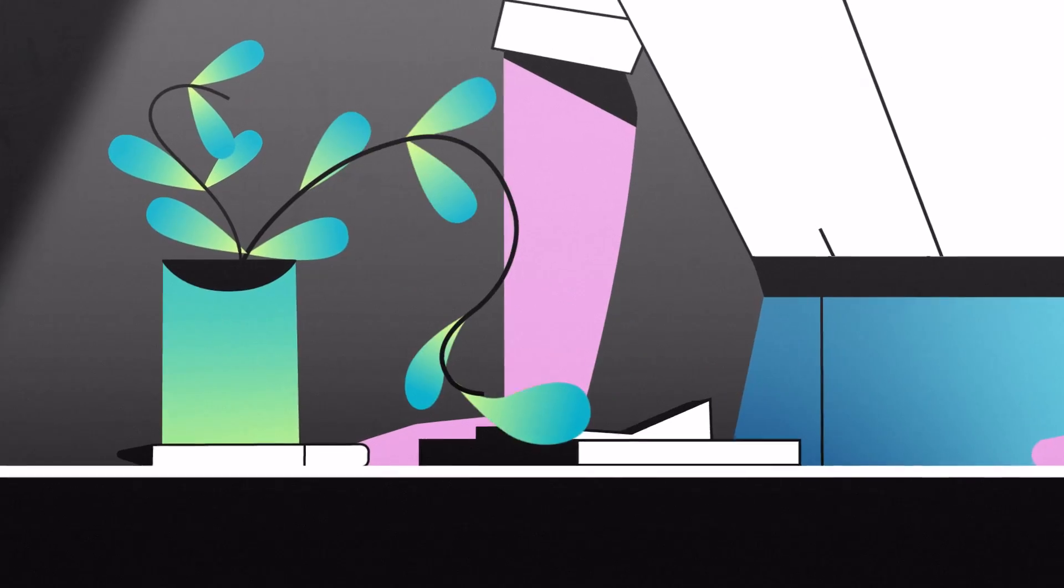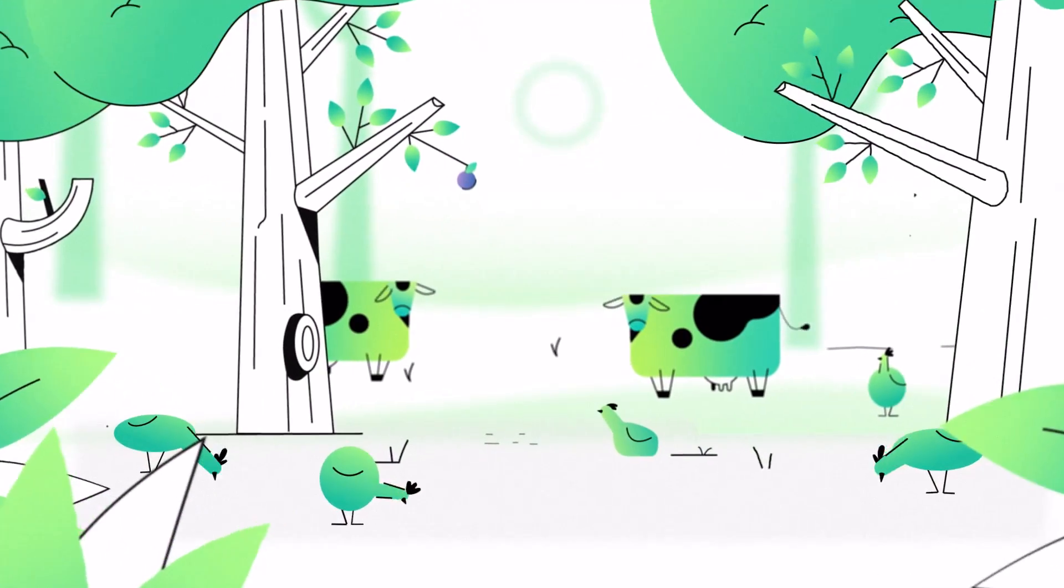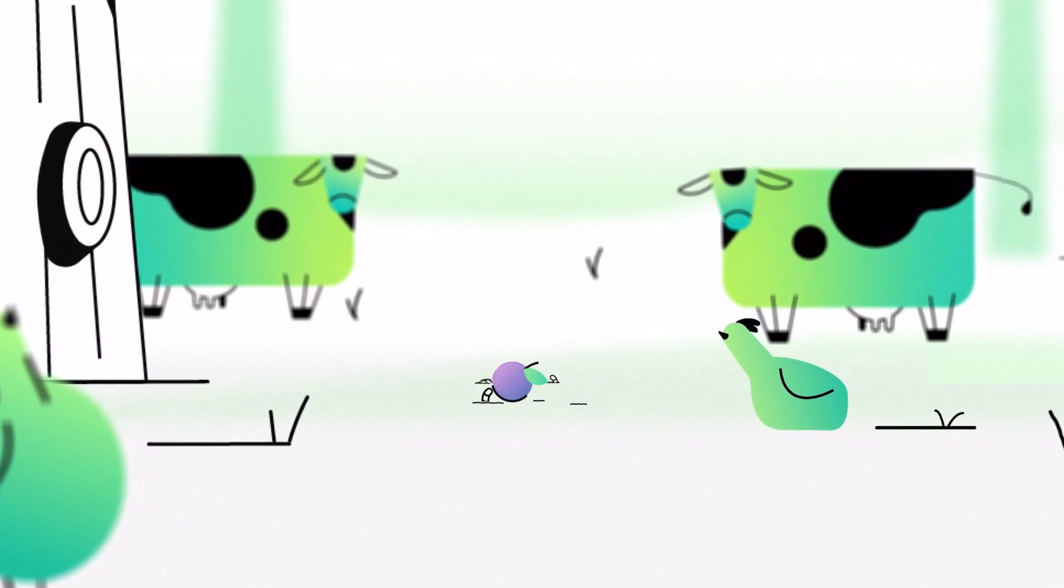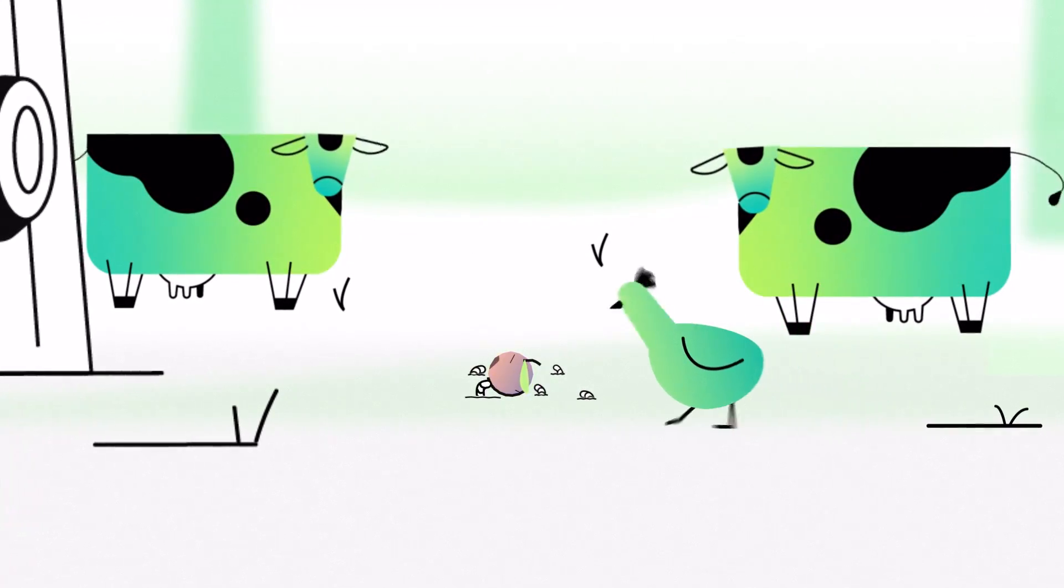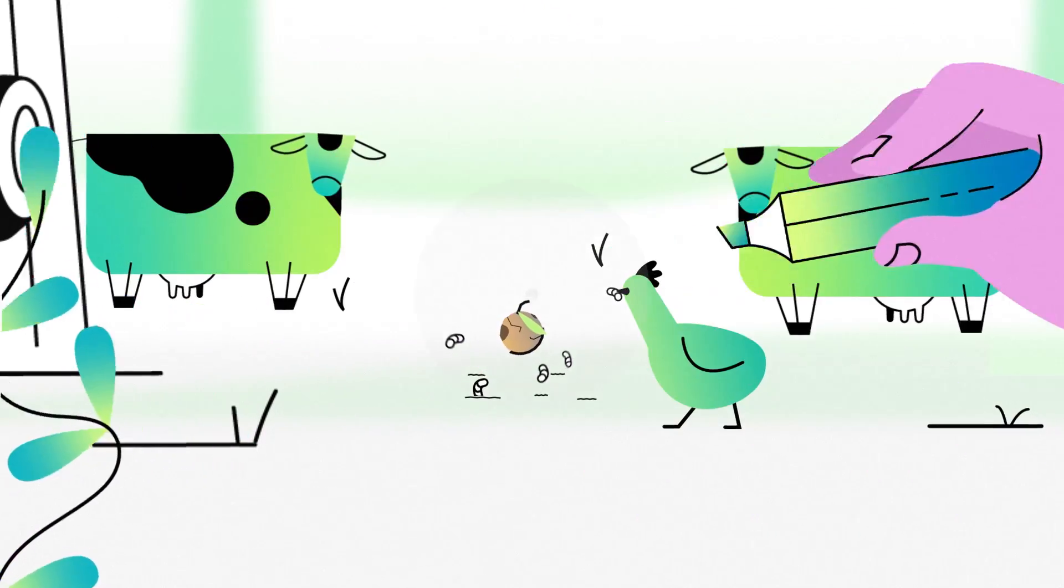Nature has already solved it for us. The answer lies in the food we waste. In nature, nothing is wasted. Because to insects, our waste is food. This way, uneaten nutrients are naturally upcycled.